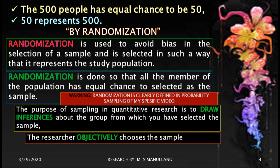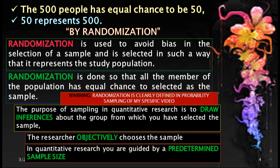Regarding the researcher's position in quantitative research, the researcher must be objective in choosing the sample. Objective means the researcher has no personal involvement in how the sample is included from the population. The researcher is guided by a predetermined sample size, meaning the number of the sample must be determined before the data is obtained in the research.